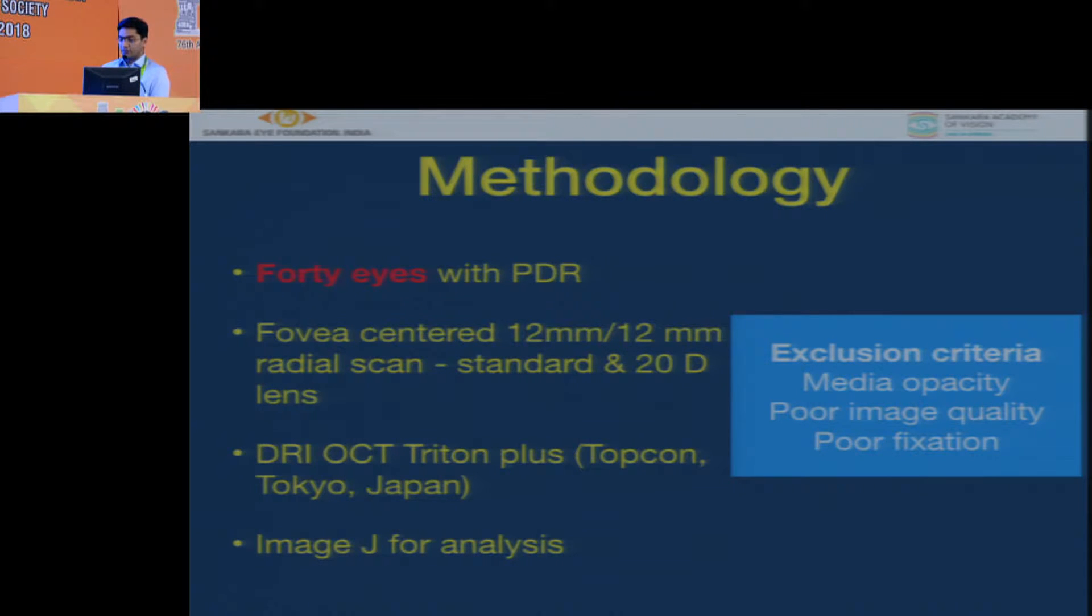So we started our study which included 40 eyes in which we had done a 12-by-12 scan, a radial scan by a standard and a 20-diopter lens using a DRI Triton SS OCT and the images were analyzed using an ImageJ software. The exclusion criteria was media opacity, poor image quality, or poor fixation.